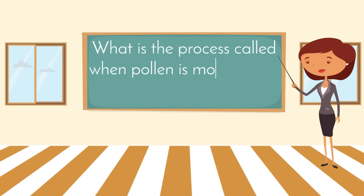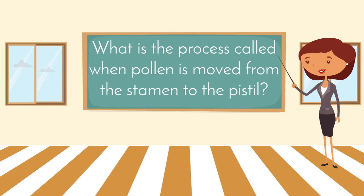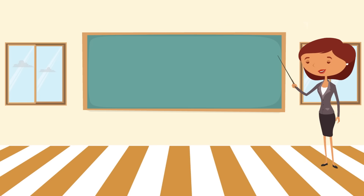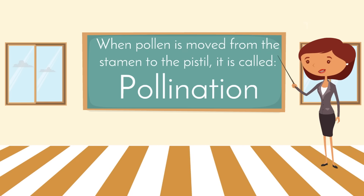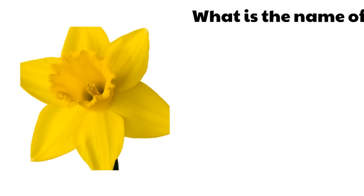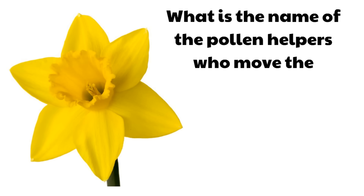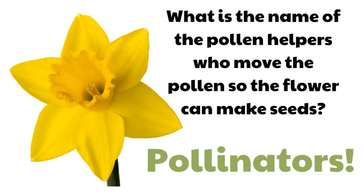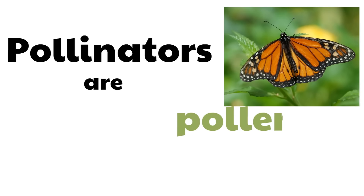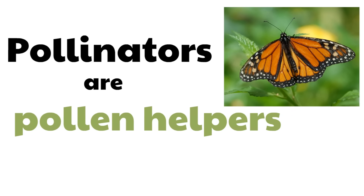What is the process called when pollen is moved from the stamen to the pistil? Great job! When pollen is moved from the stamen to the pistil, it is called pollination. What is the name of the pollen helpers who move the pollen so the flower can make seeds? That's right, they're called pollinators. Pollinators are pollen helpers — they move the pollen to the pistil so the flower can make seeds.